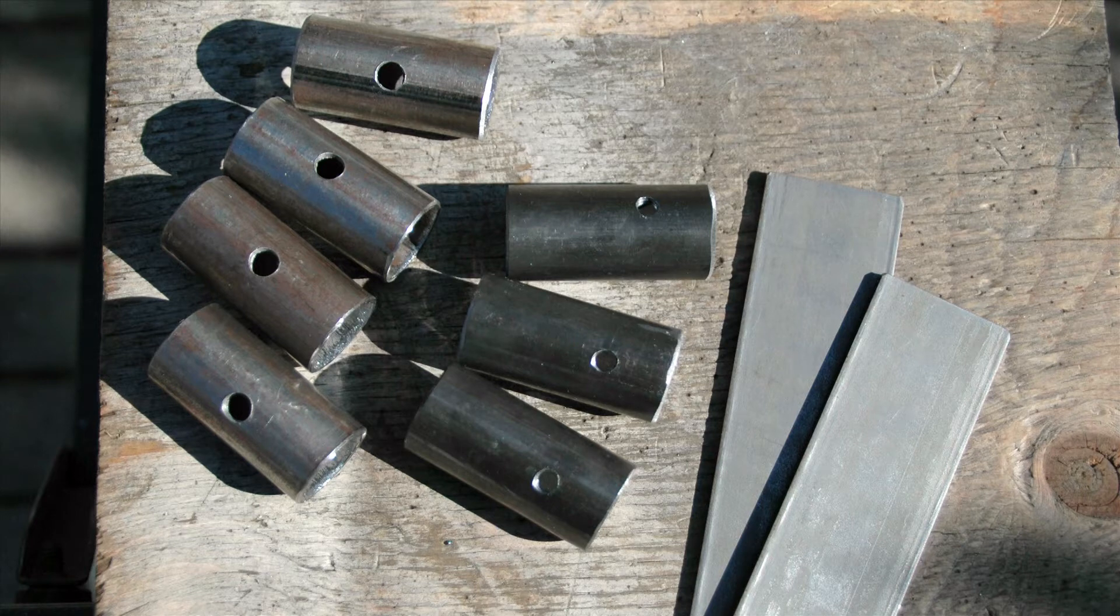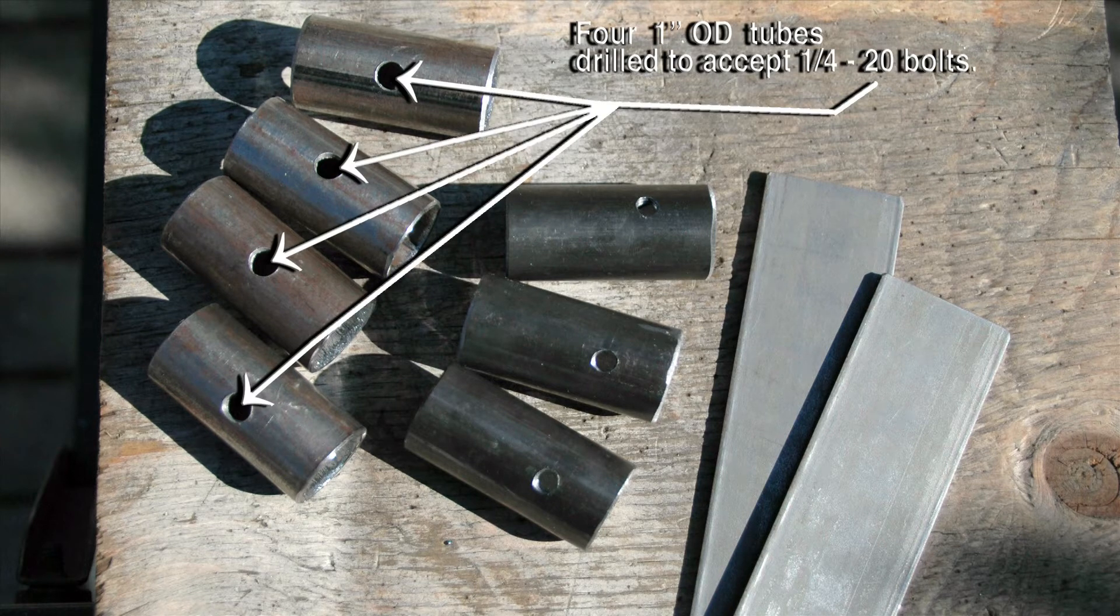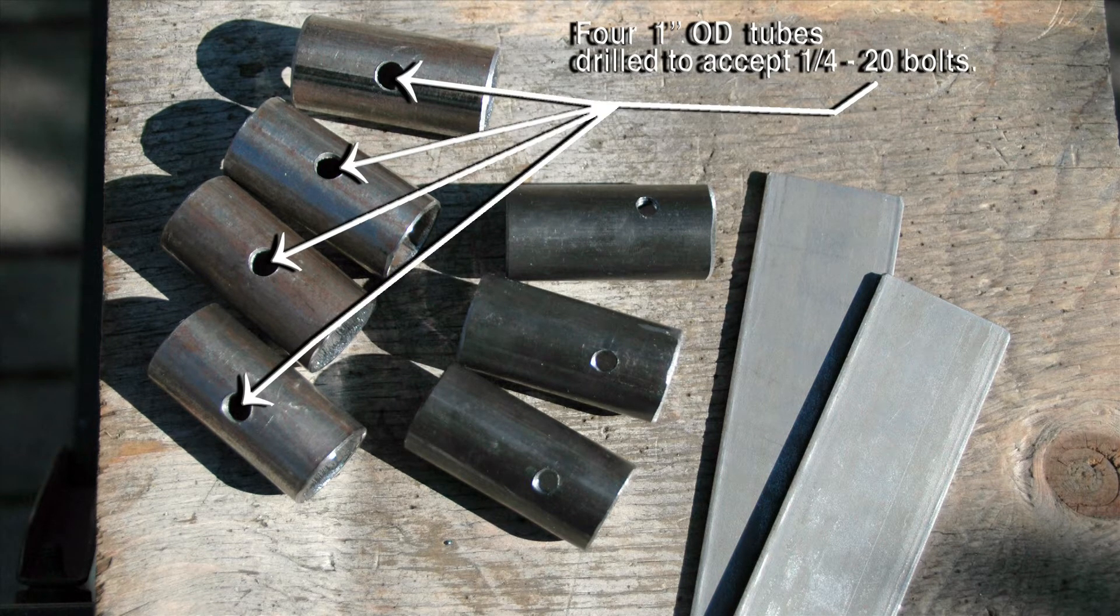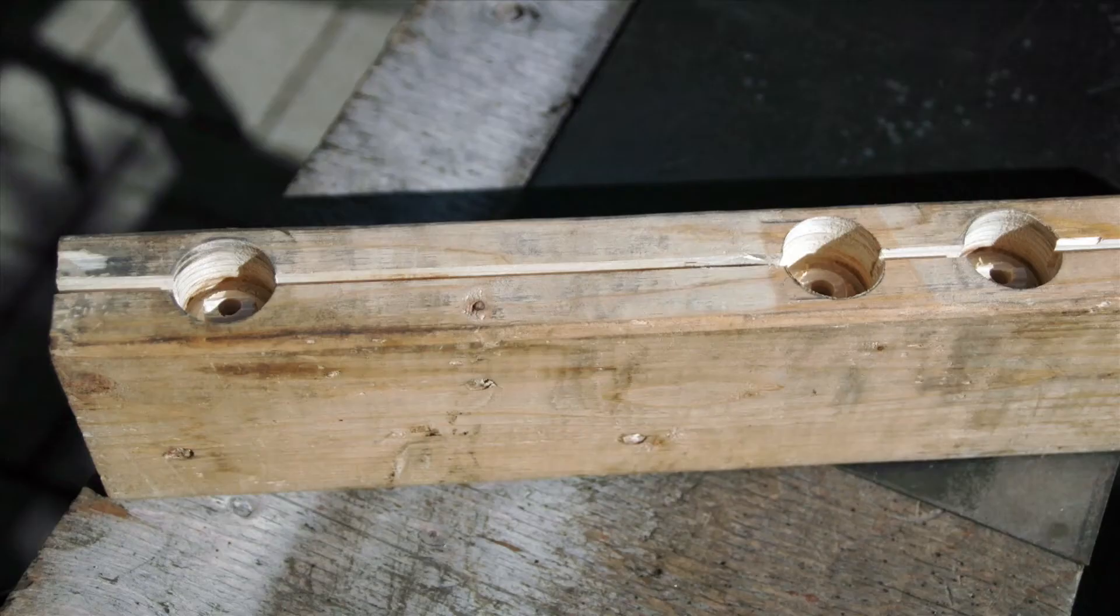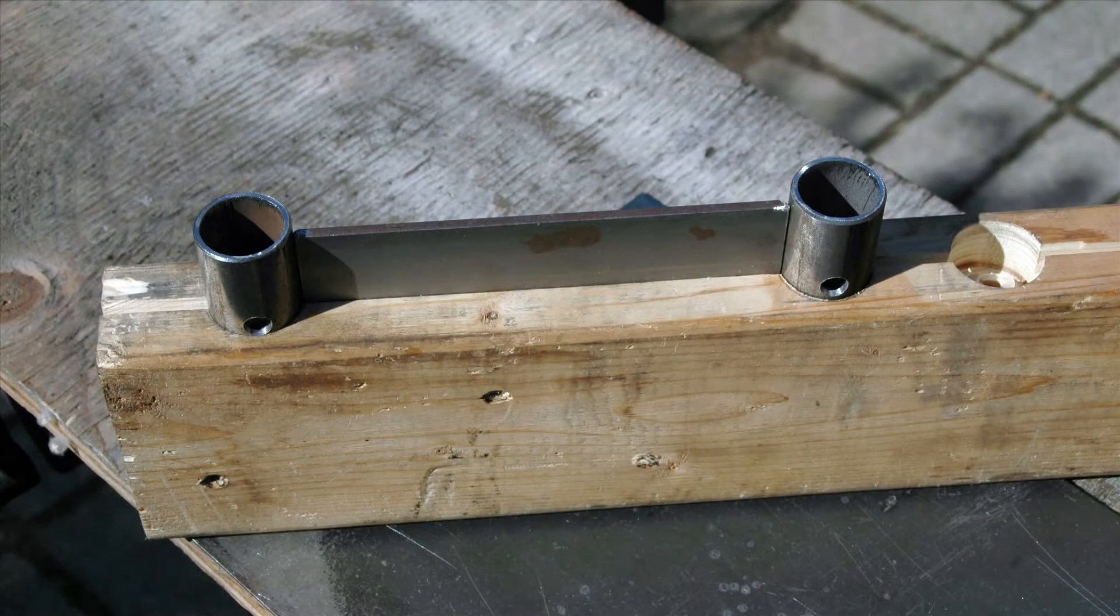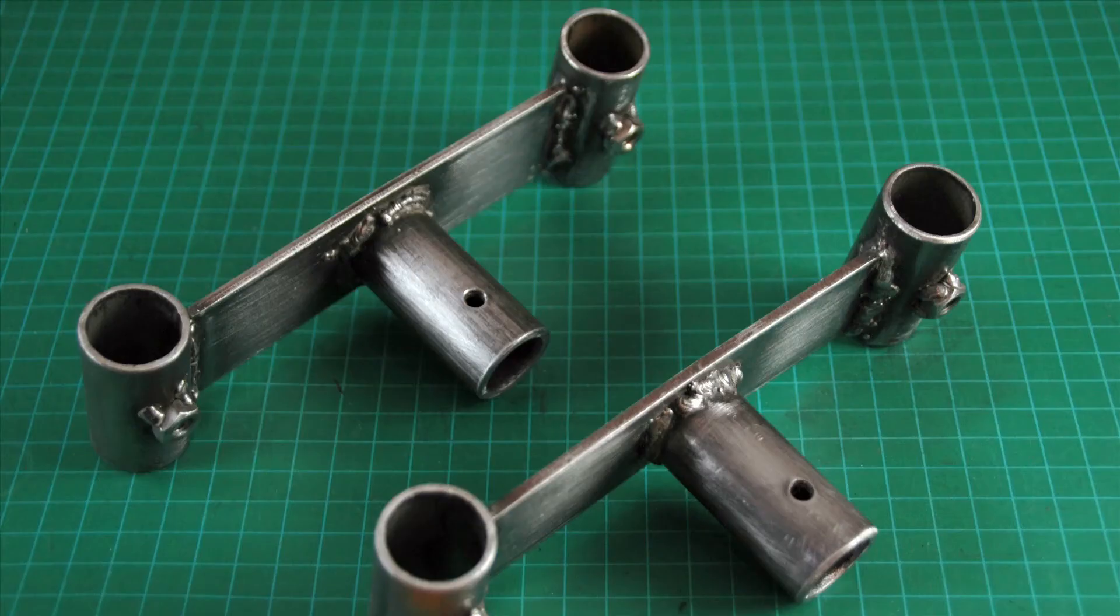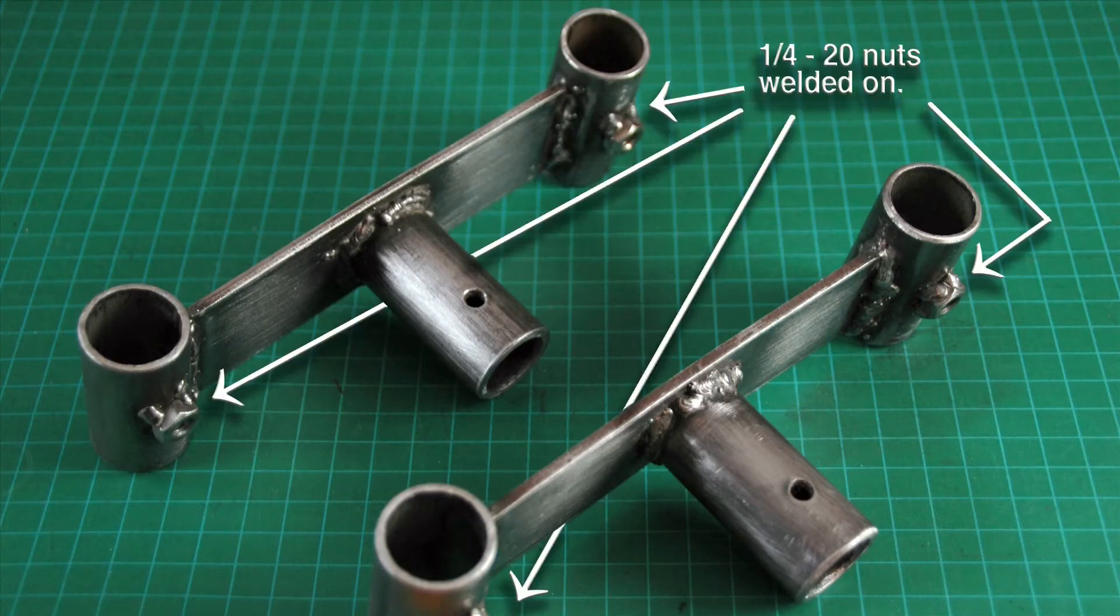The four one inch diameter tubes, cut to two inches long for the rail brackets, were drilled out to freely accept the quarter 20 bolts. They were held in place by this jig I made from a piece of 2x4 so they could be welded to the flat bar. After this, the quarter 20 nuts were welded on.